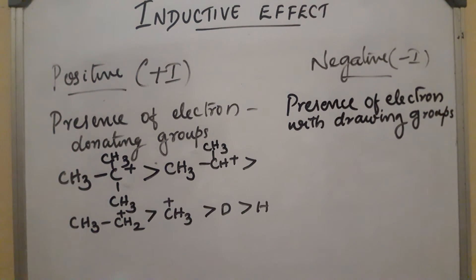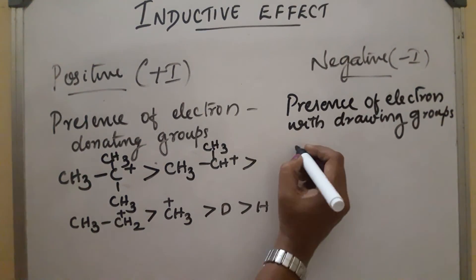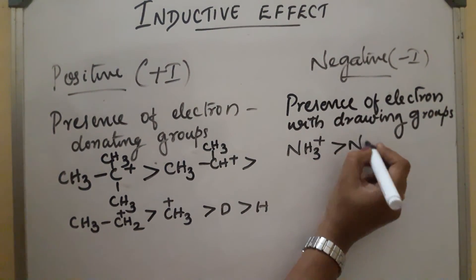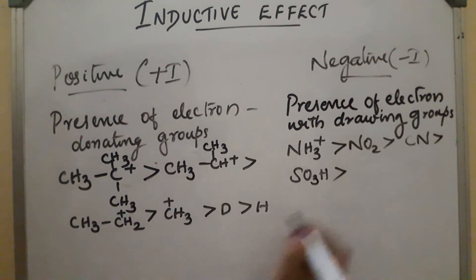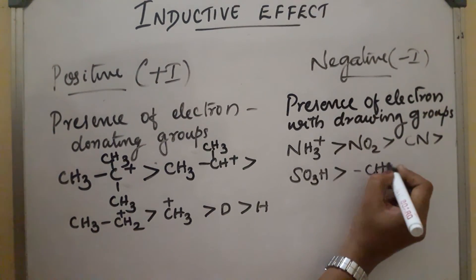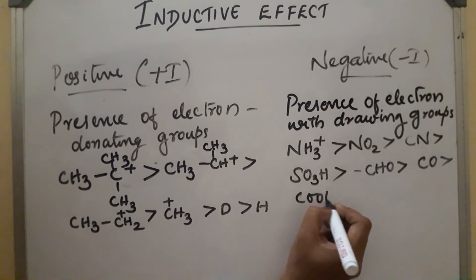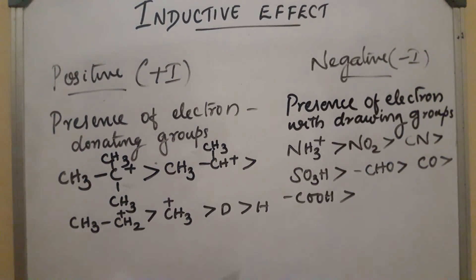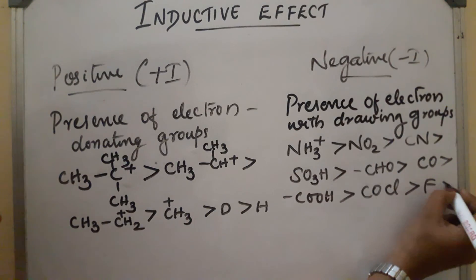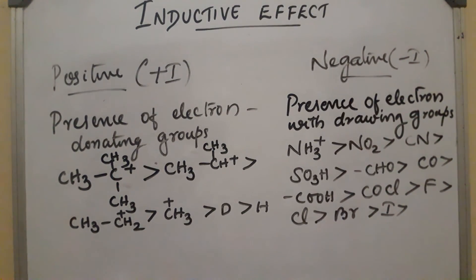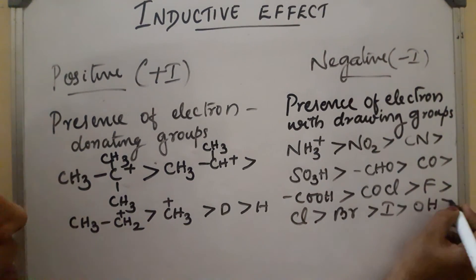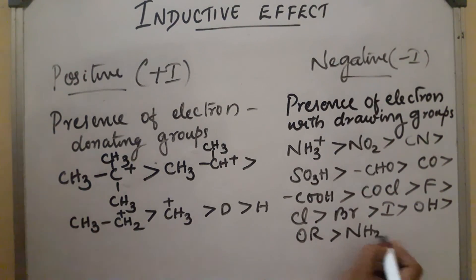The electron withdrawing groups (−I effect) include: NH3+, NO2, CN, SO3H, CHO (aldehyde), COOH (acid group), COF, CONH2, and halogens F, Cl, Br, I in decreasing order. Additionally, OH, OR, and NH2 also exhibit −I effect. These are all electron withdrawing groups.